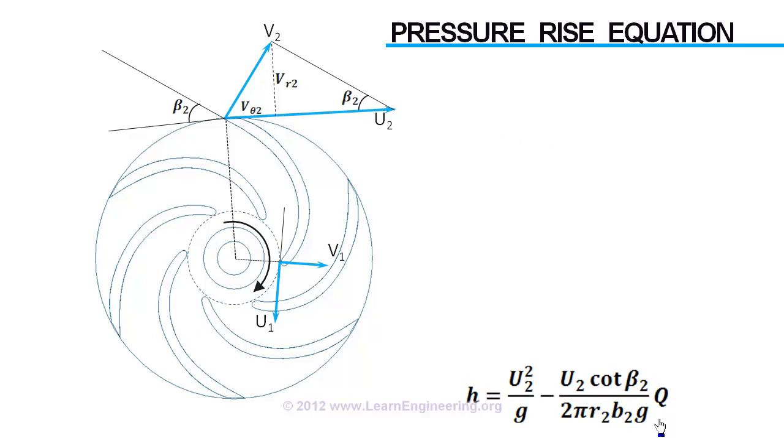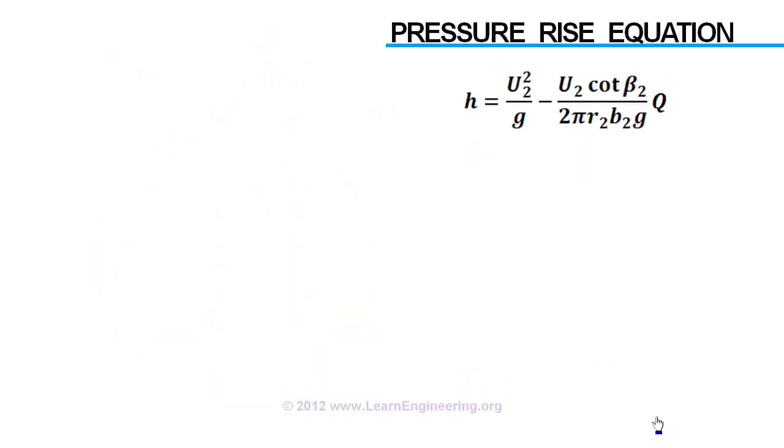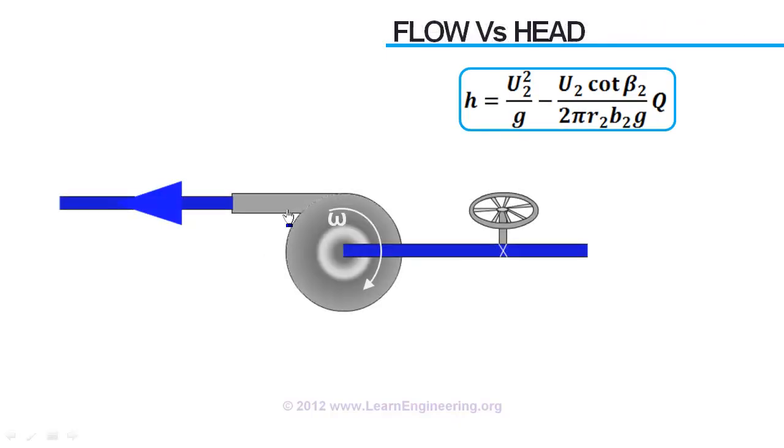Using this we can predict what's the head rise as we change the flow rate for a particular pump geometry and a particular impeller angular velocity. Most important parameter in this equation is blade outlet angle, beta. There can be three different pump characteristics depending upon value of this angle.